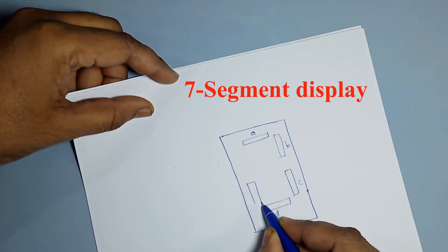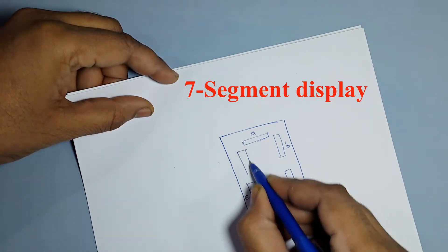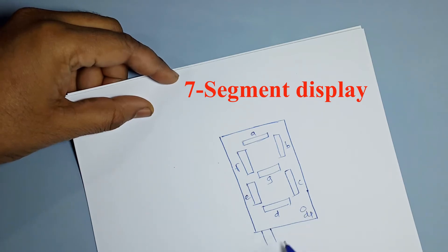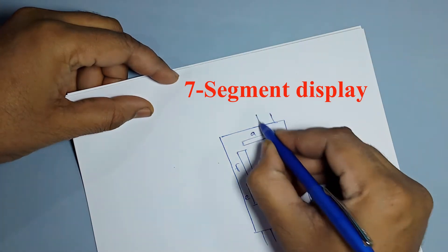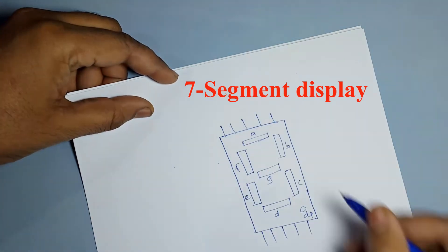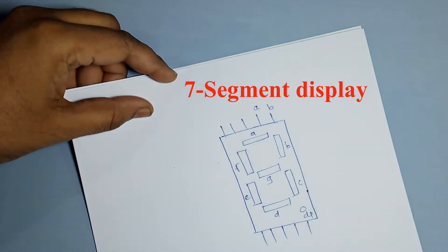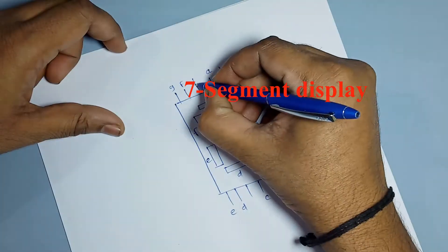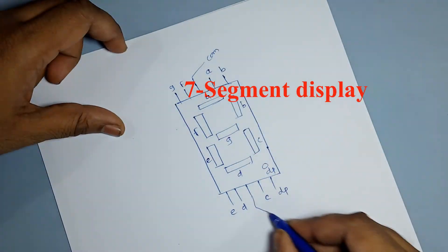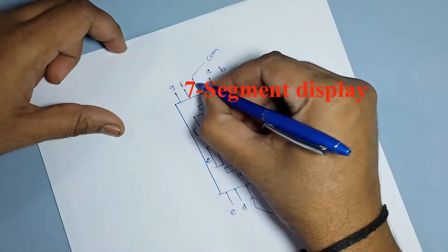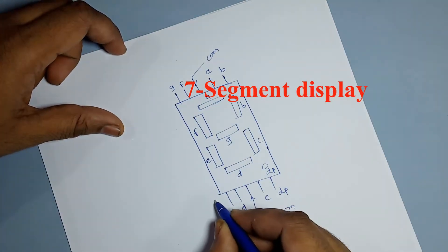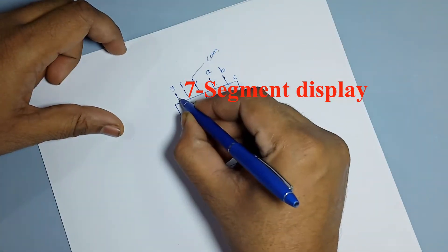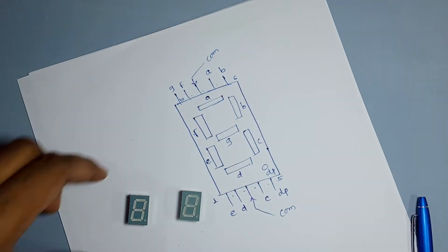7-segment display has 10 pins. Tyachi pin-out diagram khadil pramaane aste. A to G pins ahet, ya LED la connect astat. Vo middle pin hai common aste. Ya common pins don prakaarche astat: common anode aani common cathode.